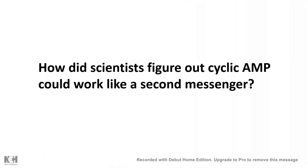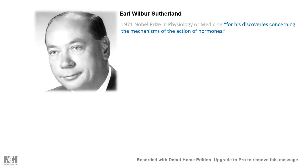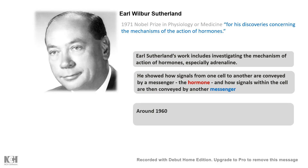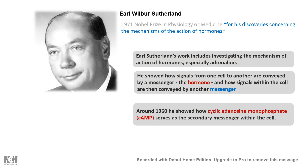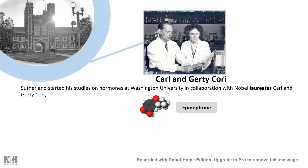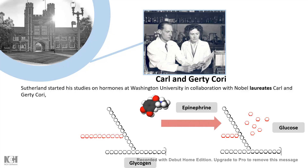Scientists figured out that cyclic AMP works as a second messenger largely due to the work of Earl Sutherland, who received his Nobel Prize in 1971 in Physiology and Medicine for his discoveries of mechanisms of hormone action. He showed that cyclic adenosine monophosphate, or cyclic AMP, serves as a secondary messenger within the cell. He started his work in the lab of Carl and Gerty Cori — the famous couple who discovered the Cori cycle — looking at the role of epinephrine on glycogen breakdown into glucose.